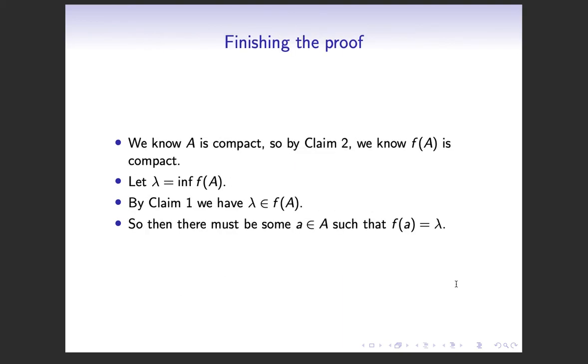So when we put these two together this is going to prove our result. We know A is compact so claim two tells us that f(A) is compact. And then because it's bounded we know that its infimum exists so we can let lambda equal the inf of f(A).